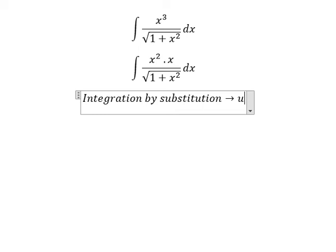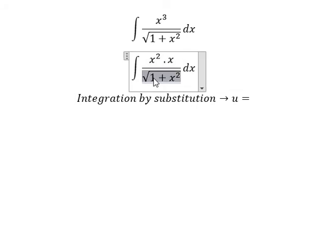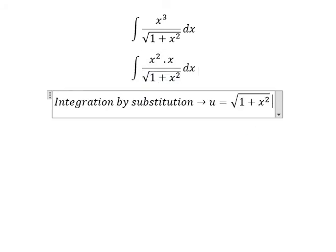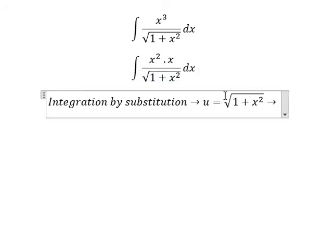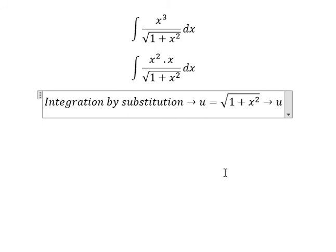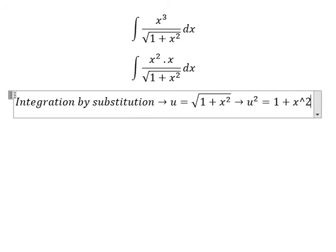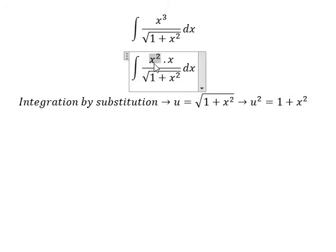So we set u equals to the square root. Later, we square both sides. Because we still have x to the power of 2, we move number 1 to the left side.